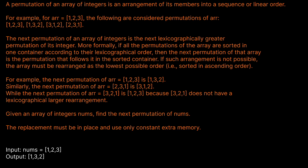It's quite a mouthful. A permutation of an array of integers is an arrangement of its members into a sequence of linear order. For example, for array 1, 2, 3, the following are considered permutations of the array: 1,2,3 — 1,3,2 — 3,1,2 — 2,3,1.